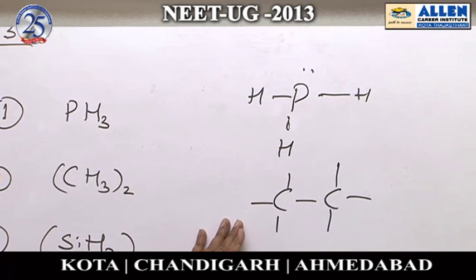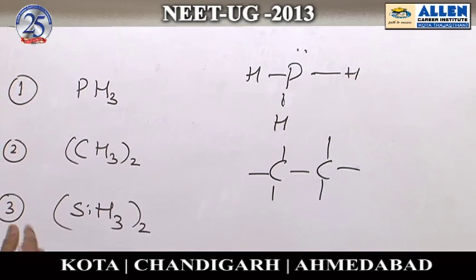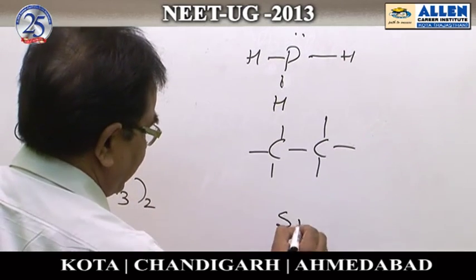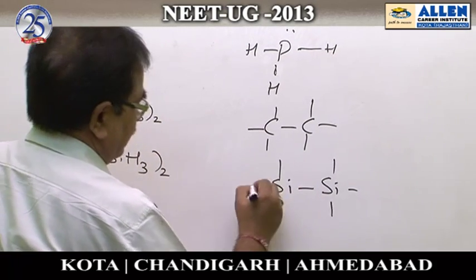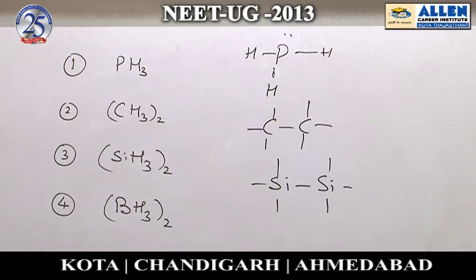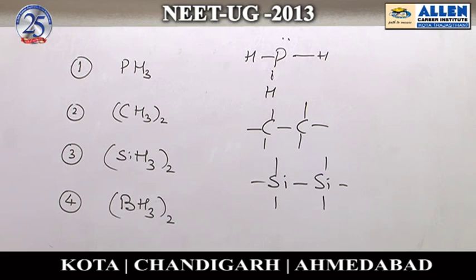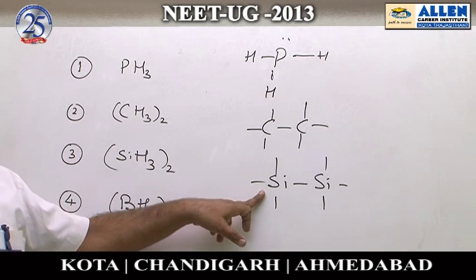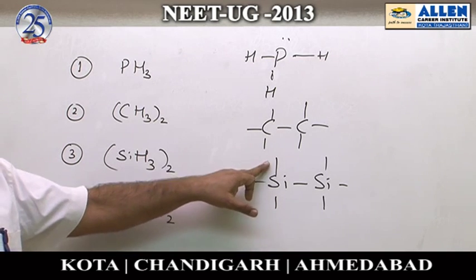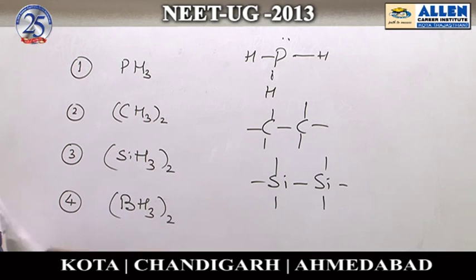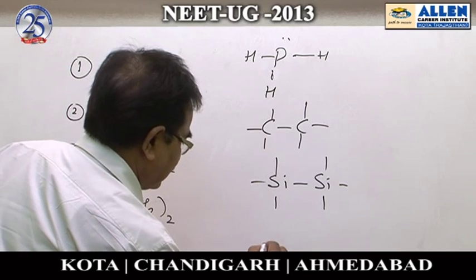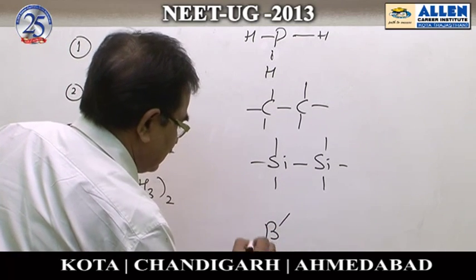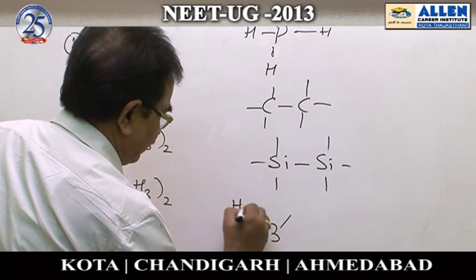Option number 2 is C2H6 — in this molecule, the octet of carbon is complete. Option number 3 is Si2H6 — in this molecule, the octet of silicon is also complete: 2+2=4, 4+2=6, 6+2=8 electrons.